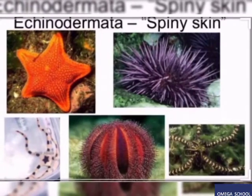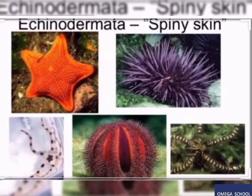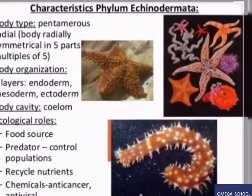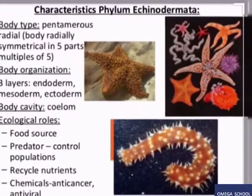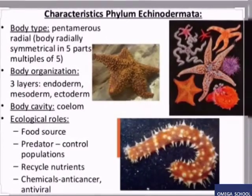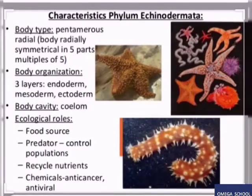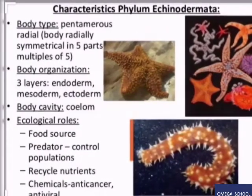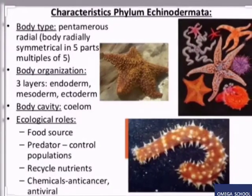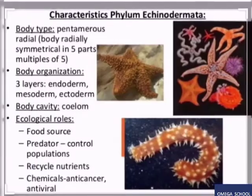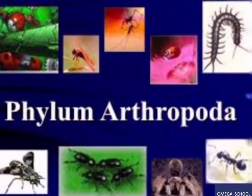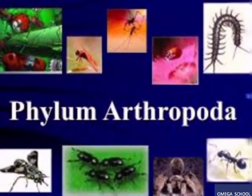The next one is the phylum Echinodermata — the spiny-skinned animals. All of them are marine animals. They move around using tube feet and typically have four or five arms. Ecologically, they are important as a source of food, for recycling nutrients, and for producing different medicines, especially anti-cancer and anti-viral compounds.